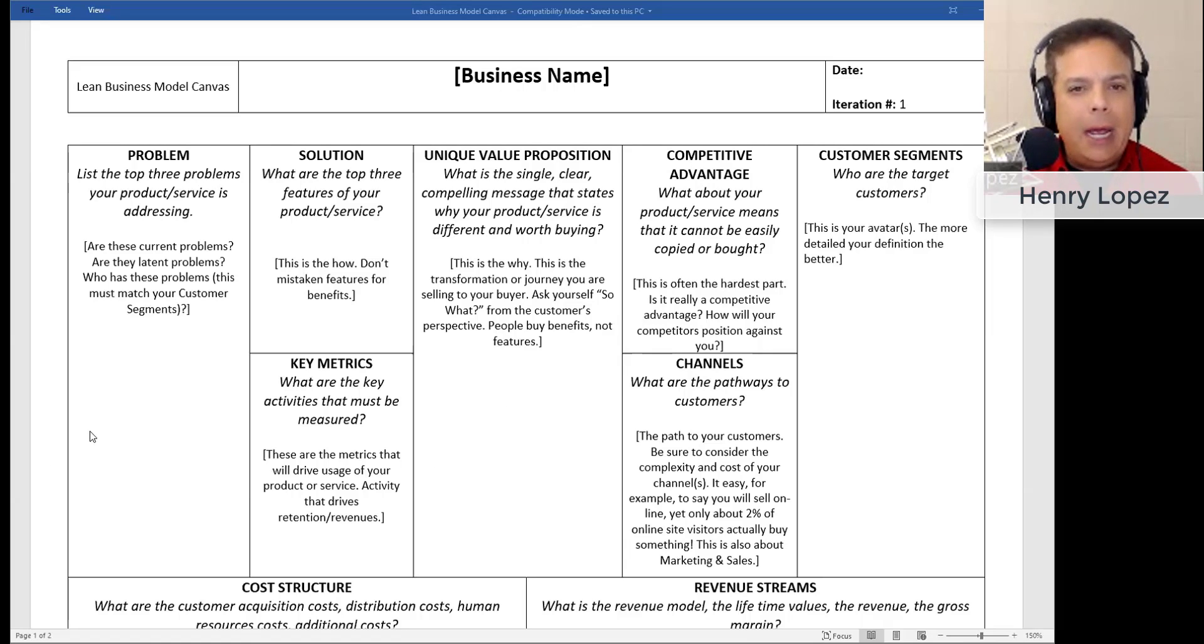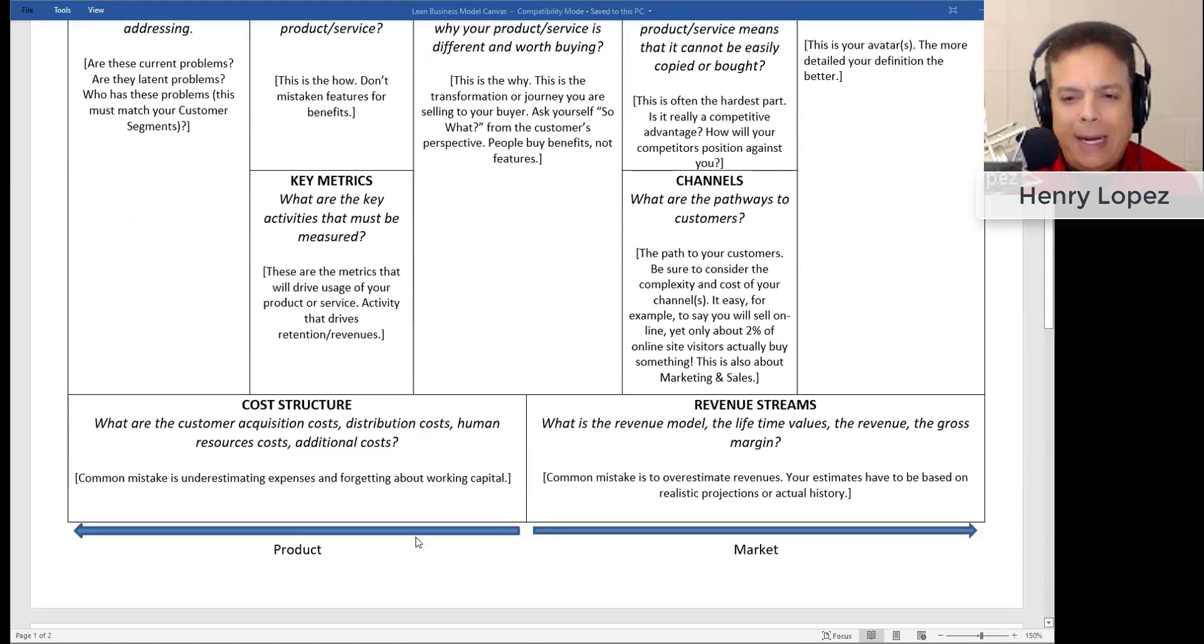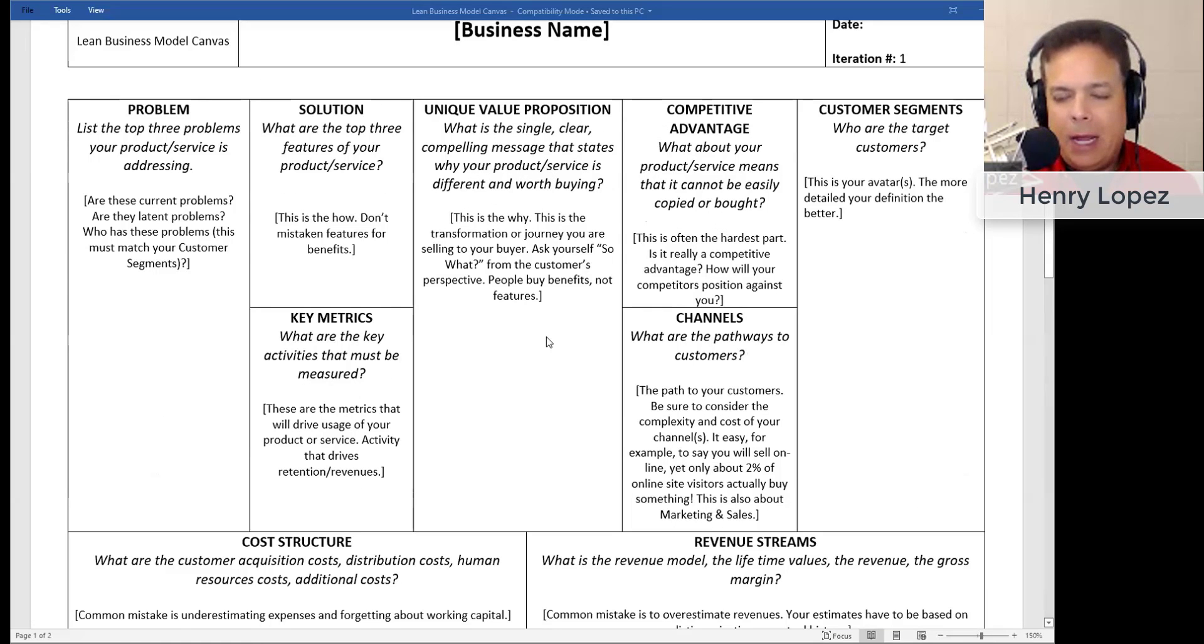So what are the main components? You'll see the labels to the boxes. If I scroll down, you notice these arrows at the bottom divide it into the product focus components and the market focus components, with the value proposition falling right in the middle. I'm going to show you where you can download this copy. It's available on my website at thehowofbusiness.com as a free download.